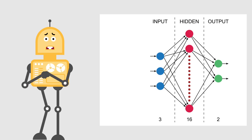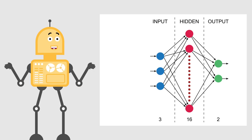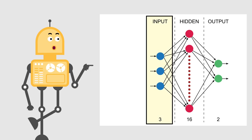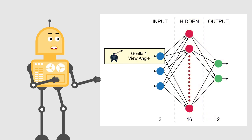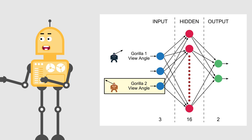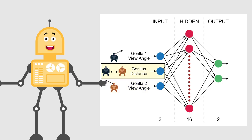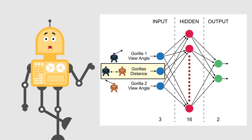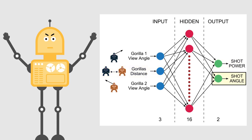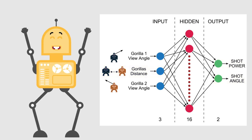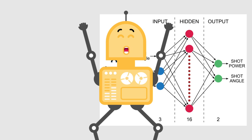More details on this in the next video. For now, just to say that our model has three inputs, 16 hidden nodes, and two outputs. The inputs are: view angle of the first gorilla, view angle of the second gorilla, and the distance between both gorillas. The outputs are the power and the angle of the shot. So let's take a look at how gorillas use their new brains.